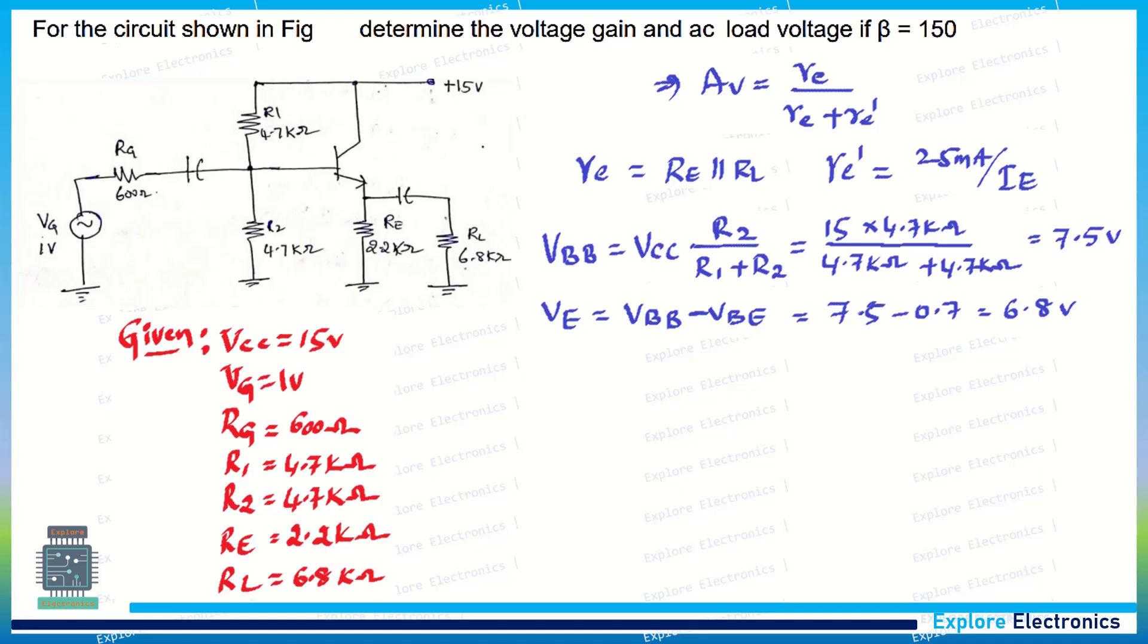If you do this, we get the voltage at the emitter, which is 6.8V. Now using VE we can calculate the current IE, the current flowing through the emitter, that is 3.09 milliamps. Using this IE we can calculate re'.